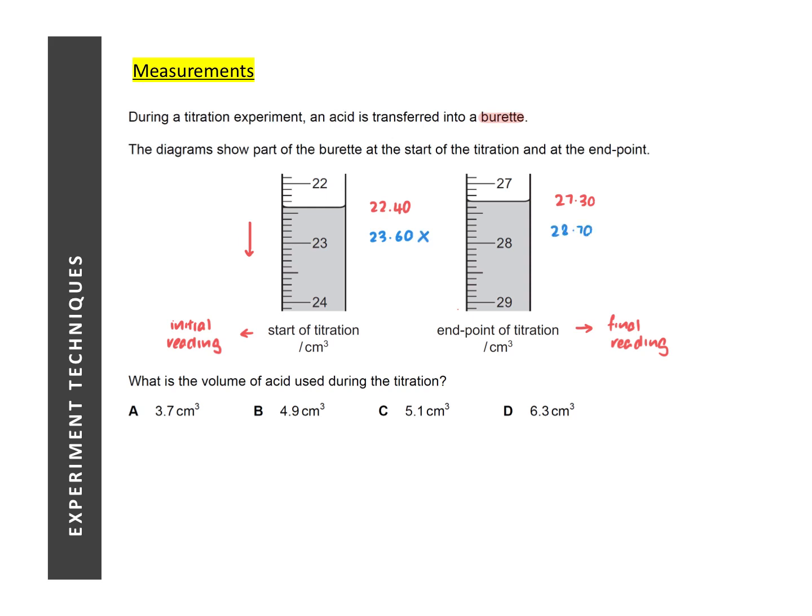Now that we have the initial and final reading, how do we find the volume of acid being transferred? Take the final reading minus the initial reading, and that would give us a value of 4.9.